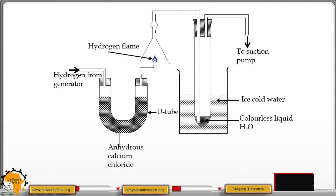You get the dry hydrogen which burns with a blue flame. The product for the burning of the hydrogen in air is collected by this inverted filter funnel and it is passed through ice-cold water. The ice-cold water is meant to condense that gas.